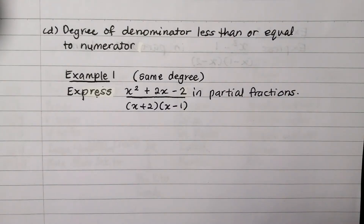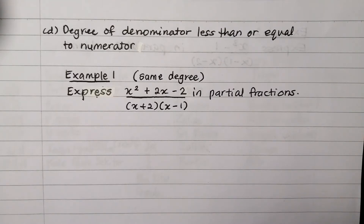Partial fractions with degree of denominator less than or equal to numerator. For this subtopic, we have two examples. For the first example, we deal with the same degrees — meaning the degree of the denominator is equal to the degree of the numerator. Look at Example 1.